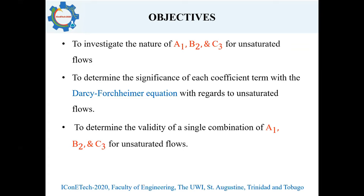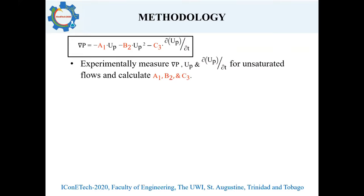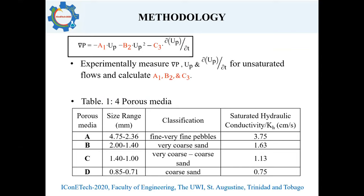The method used to obtain these objectives was to set up a series of laboratory experiments which permitted measurements of pressure difference, velocity, and acceleration for unsaturated flows, and then compute the coefficients A1, B2, and C3. These experiments were conducted on four media types as shown in the table (A to D), which were generally coarse-grained, and as a result their saturated hydraulic conductivities were generally high.